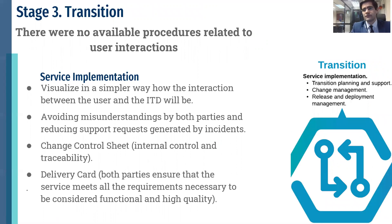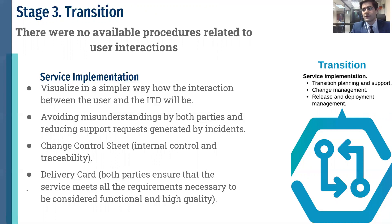The third stage is formulated with the service implementation phase, in which a general transition strategy was designed for each of the identified services, simplifying the interaction visualization between the user and the ITD. A format was designed for change management, in which a risk analysis was carried out to identify incidents that could have a negative impact when providing an agile response. A change execution plan was established to describe those activities that will serve as an input process and output when meeting a request. It was reinforced with a change control sheet due to the ITD only receiving specific modifications, requests, or service updates without generating any document that allows traceability. Finally, a delivery cut was created where the user and the ITD ensured that the service given meets the necessary requirements to be considered functional and of quality.